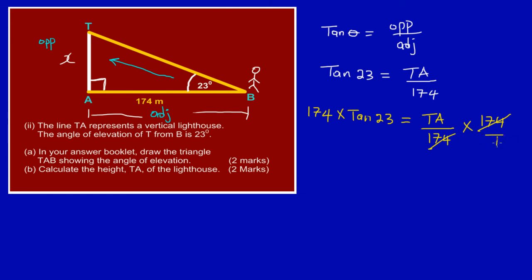Now what I have left over here is 174 multiplied by tan 23, is equal to TA. I have TA my subject so I can simply say it is 0.42448.